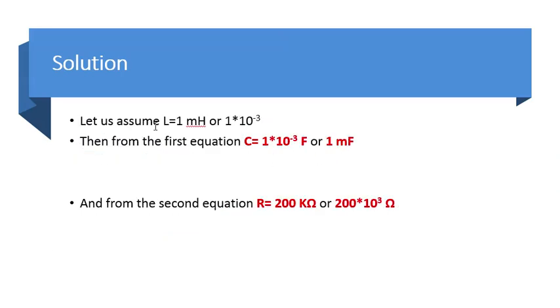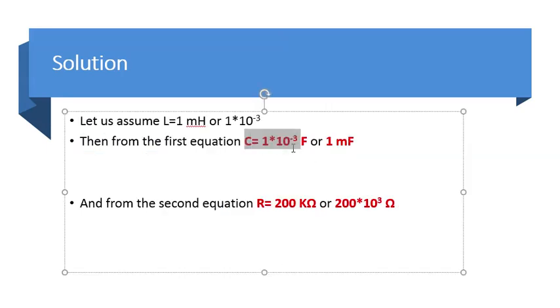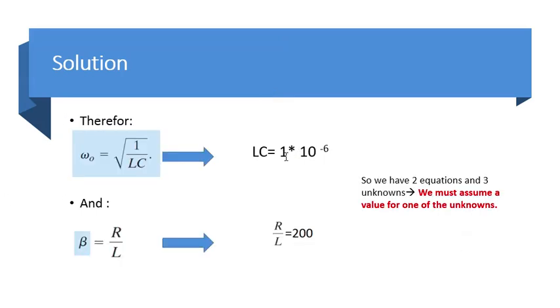I have chosen L to be 1 millihenry, or 1 times 10 to the power of minus 3. If this is the case, then since LC has to be 1 times 10 to the power of minus 6, then C will be 1 times 10 to the power of minus 3. Because this times this will give us 10 to the power of minus 6, which I had before.